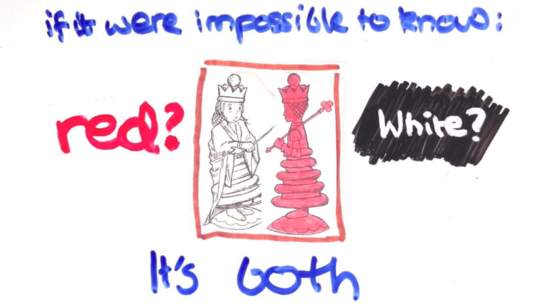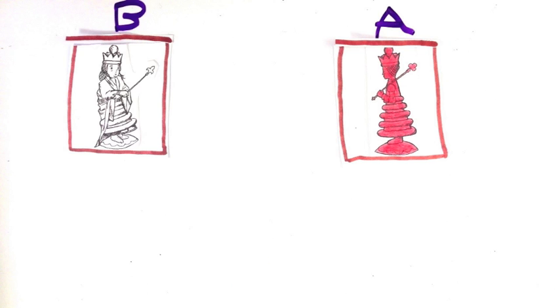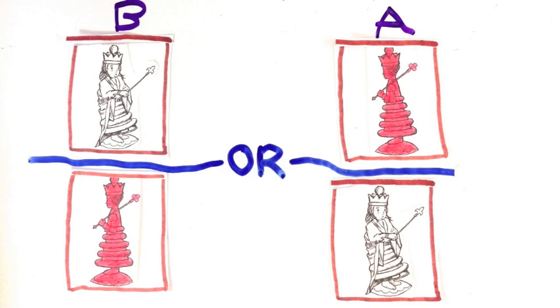But it's even weirder than that. There are two possibilities, either A is red and B is white, or the other way around. But superposition tells us that all possible things happen at once.